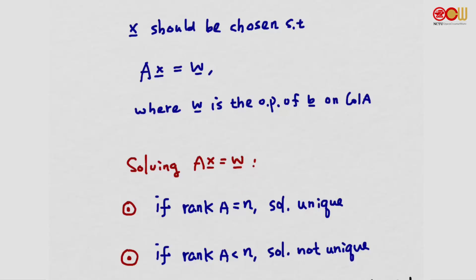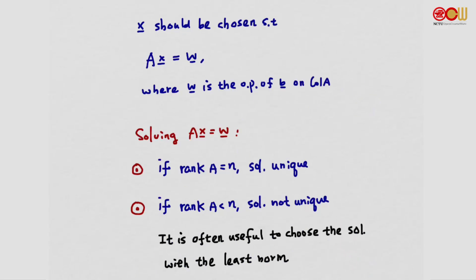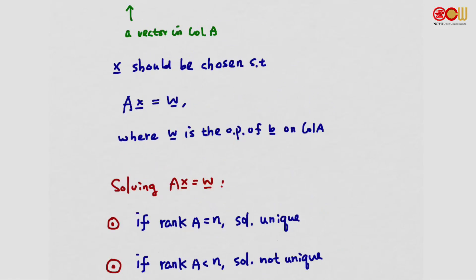The question is whether the solution is unique. If rank(A) equals n, the solution is unique. If rank(A) is less than n, the solution is not unique. When the solution is not unique, it is often useful in many applications to choose the solution with the least norm. Among all infinitely many solutions, we would like to choose the solution with the smallest norm or smallest length. When the solution is unique, we solve x as in the first part of 6.4.